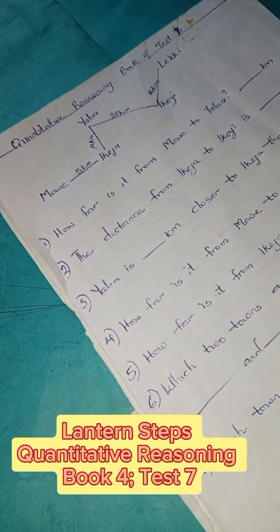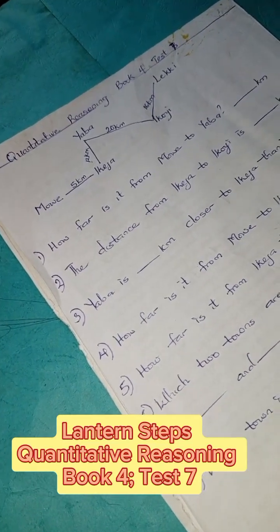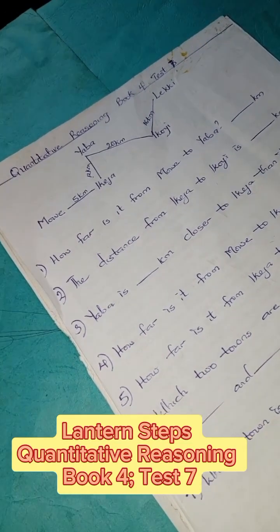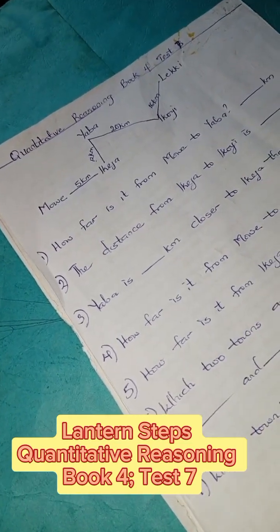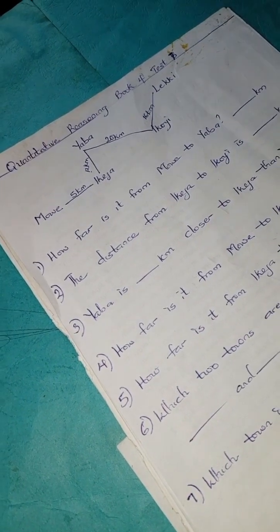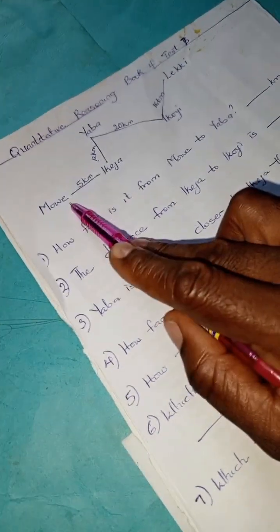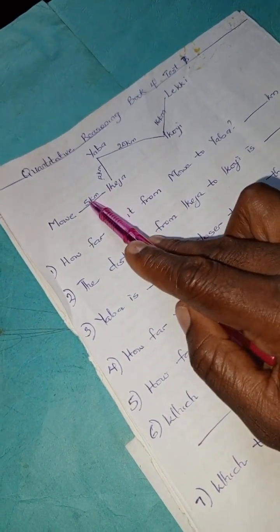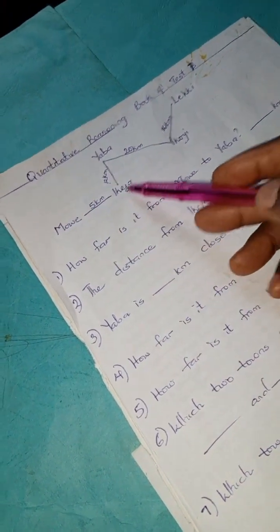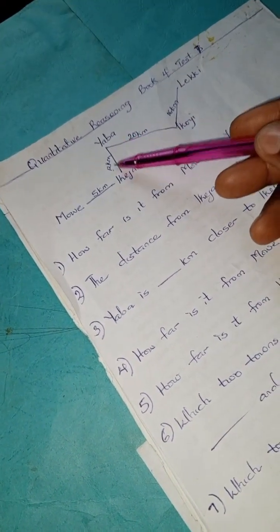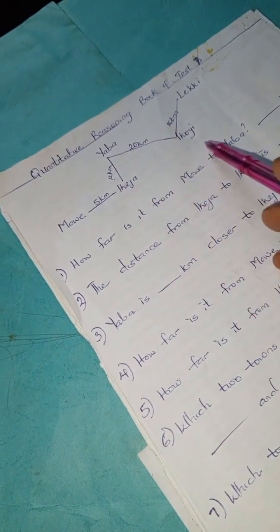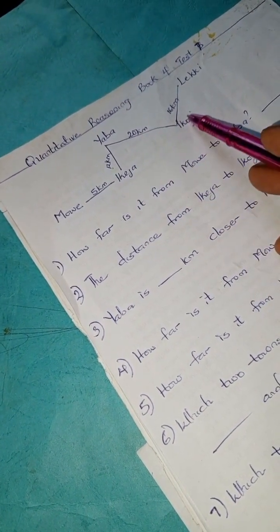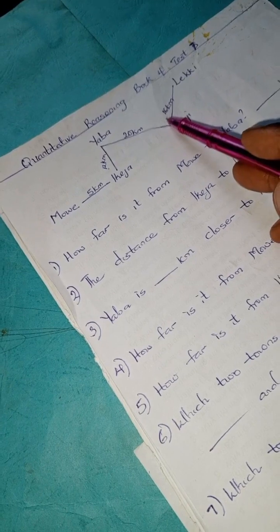Welcome to Quantitative Reasoning Solution. We have Quantitative Reasoning from Lantern Step Quantitative Reasoning Book 4, Test 7. We have a chart, more like a map. This is Mui to Ikeja, we have 5 kilometers, and Ikeja to Yaba we have 12 kilometers.